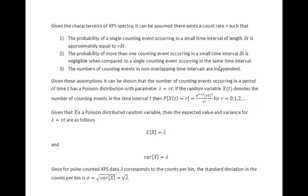When we have these three conditions we have the conditions necessary for Poisson distributed uncertainty in our counts. Lambda is the counts, because it is the count rate times the time. Poisson distributed random variables have an expected value equal to lambda — that is the counts — and the variance in the random variable is equal to lambda also.